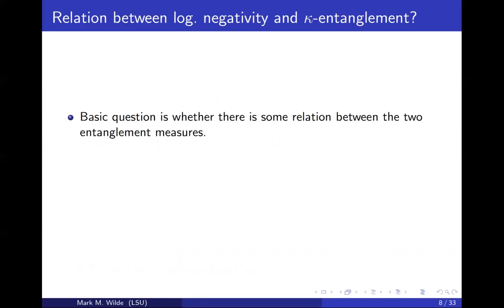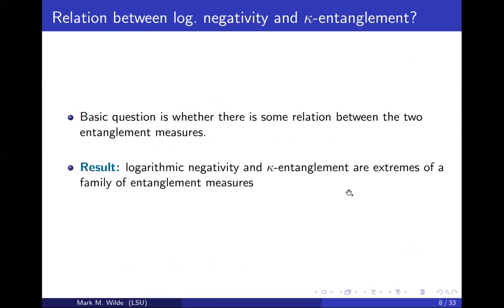The main question of this paper is the relation between these two measures. These two entanglement measures are the extremes of a family of entanglement measures. If you've studied Rényi entropy or Rényi relative entropy, those are families of entropic measures that have as special cases Shannon entropy or Shannon relative entropy for the classical case, and the von Neumann or Umegaki quantities for the quantum case. The other extremes of the Rényi families are the min entropy and the max relative entropy. We did use the letter alpha to indicate the concept is similar to the Rényi concept — alpha is often used for Rényi entropies and Rényi relative entropies.